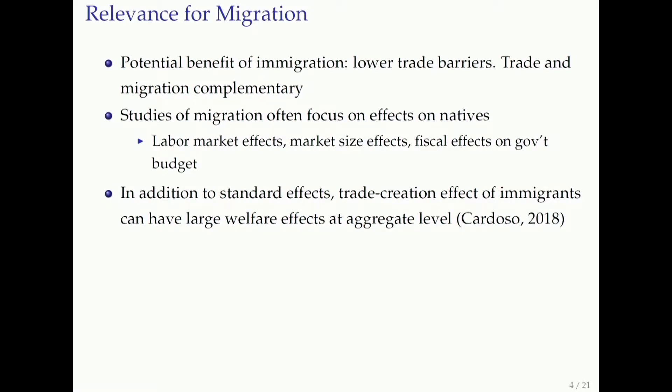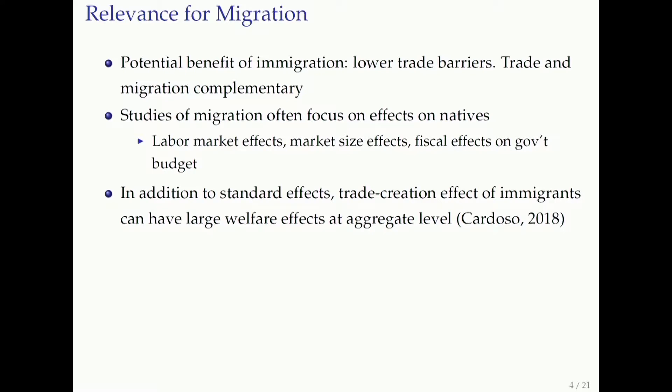In this audience I don't need to justify the importance of immigration, but I want to explain the relevance of looking specifically at immigrants' effects on trade. The obvious point is that there's a potential benefit of immigration that lowers trade barriers — something you'd miss if you abstracted from it. This suggests that trade and migration can actually be complementary. David Card's talk yesterday suggested a broad understanding that trade and migration are substitutes, but this channel suggests they're complementary. Studies of migration often focus on effects on natives: labor market effects, market size effects, and fiscal effects on government budgets. The trade creation effect is on top of all those things.